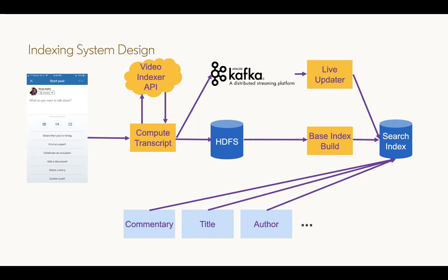One is the base index build, which takes the generated string transcript in an offline Hadoop workflow and stores it in the forward and inverted search index. Another is a live updater flow — a near-line process meant to have the transcript in the index much quicker than a scheduled offline pipeline — which listens to a Kafka topic containing the transcript data and stores it in the forward and inverted index. These two workflows provide redundancy in case of any errors and for updates to any content.